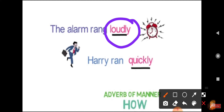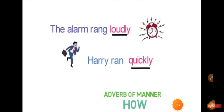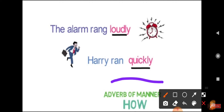Now look at the second example. Harry ran quickly. We can identify that Harry ran, but how did he run? He ran quickly. So here 'quickly' is an adverb. As this adverb describes the manner in which an action is performed, it is called an adverb of manner.